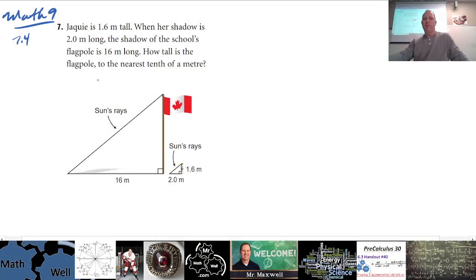All right, so number 7, 7.4 says this: Jackie is 1.6 meters tall. When her shadow is 2 meters long, the shadow of the school's flagpole is 16 meters long. How tall is the flagpole to the nearest tenth of a meter?